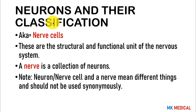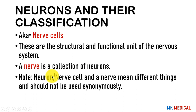There is also supporting tissue, or stroma. The stromal cells include microglial cells, oligodendrocytes, Schwann cells, and ependymal cells, which support the nerve cells. A nerve is a collection of neurons. The word neuron and nerve cell mean the same thing, but neuron and nerve do not — a nerve is a collection of neurons, while a neuron is an individual cell. You should not use those terms interchangeably.